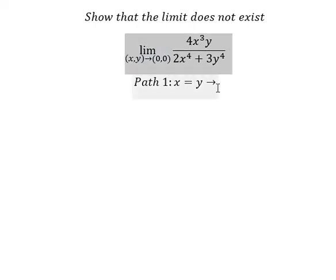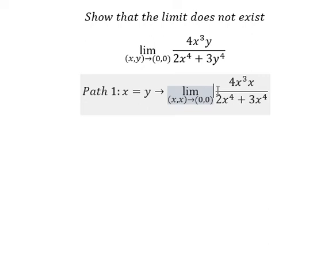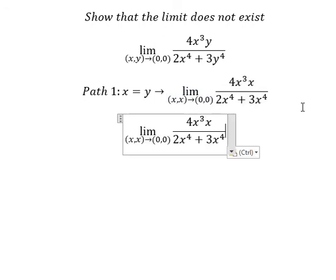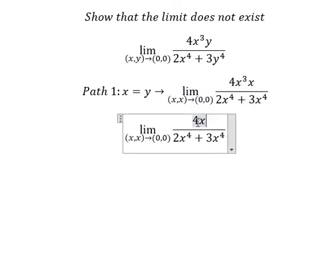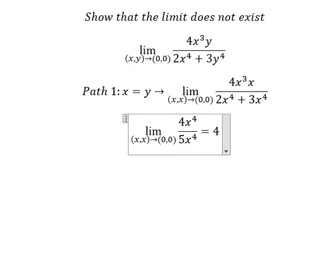We have the limit here, so we change y into x. We change this one for x, this one we change for x. So we have x to the power of 4, 2 plus 3 is 5. We simplify and get 4 over 5.